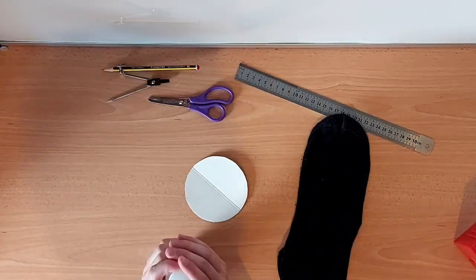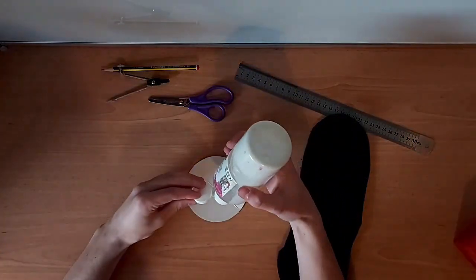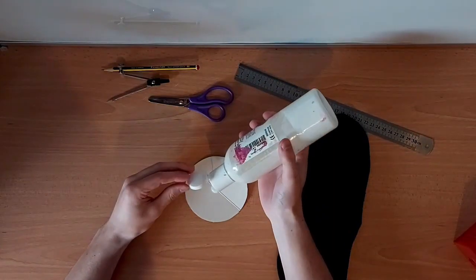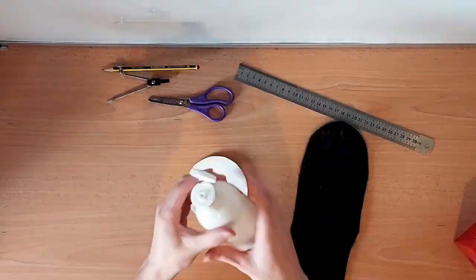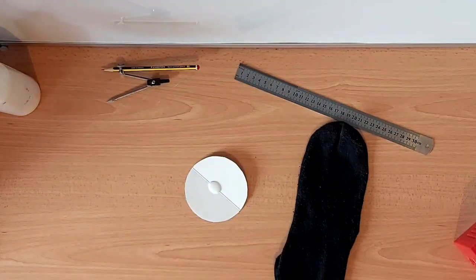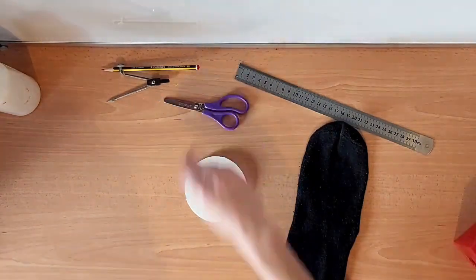Now you need to take your glue and put some onto the cardboard. Once you have done that, you need to spread the glue around so that it covers all of that side of the cardboard.